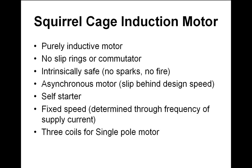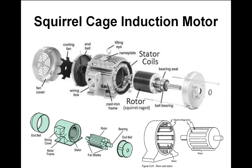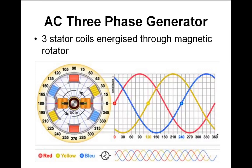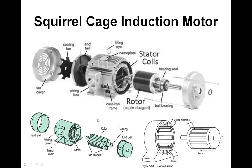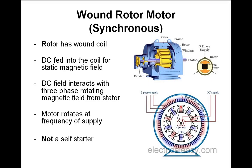Fixed speed is tied to the supply frequency. When we talk about single, double, or triple pole motors, it's about pole pairs. Looking back at the generator diagram: you've got one red phase, one yellow phase, and one blue phase — each is considered to be a pole pair. Now, the wound rotor motor — that's the synchronous motor.